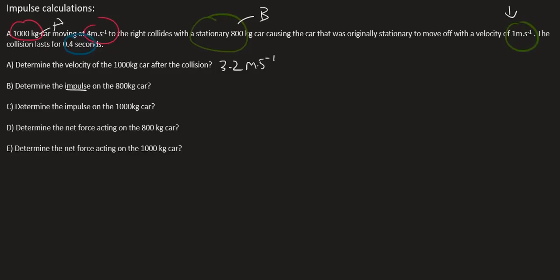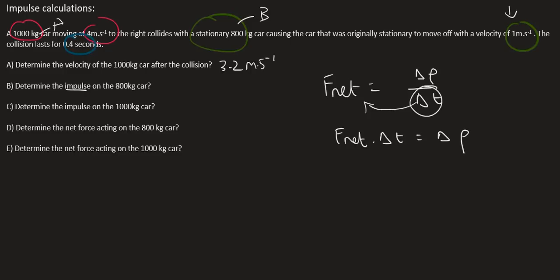Next, determine the impulse. On your formula sheet you have F_net equals change in P over change in time — that's Newton's second law in terms of momentum. If you multiply time to the other side you end up with impulse on the left. If you know the net force and you know the time, you can calculate the impulse. But if you don't know the net force, you can calculate it a different way, because the change in momentum is the same as the impulse — they are equal.